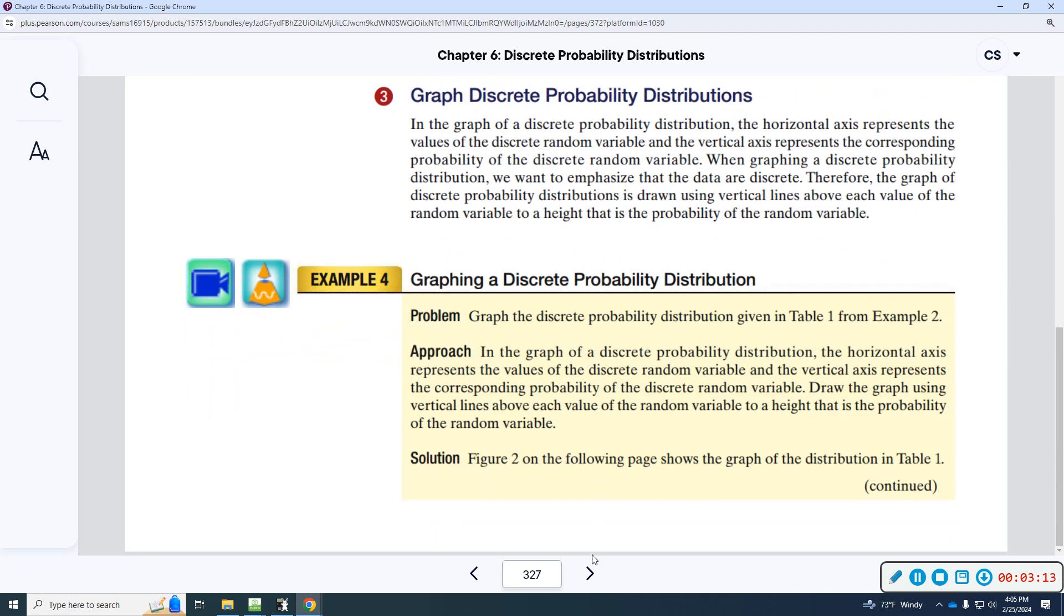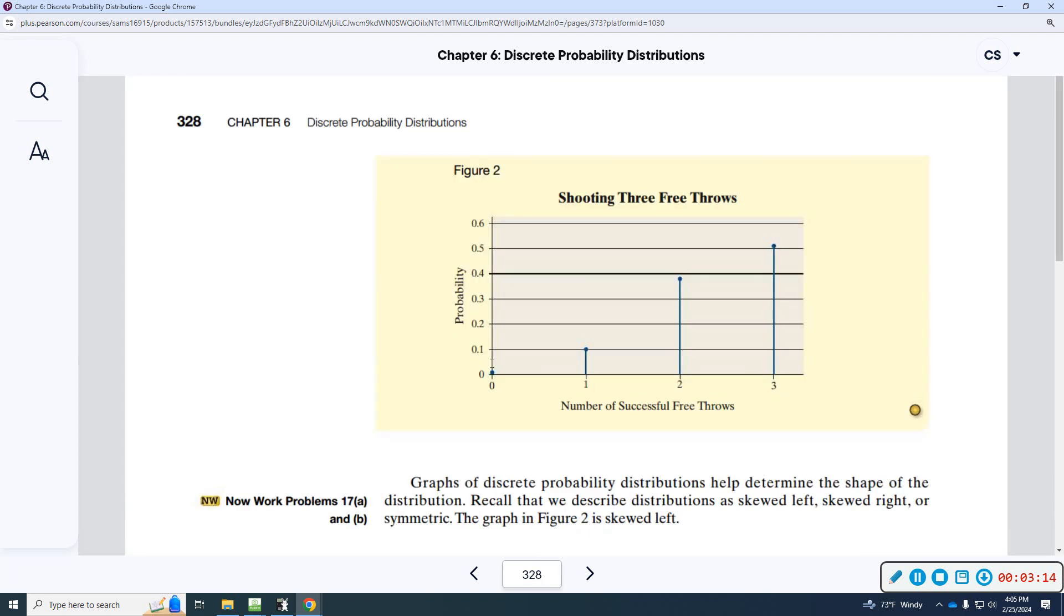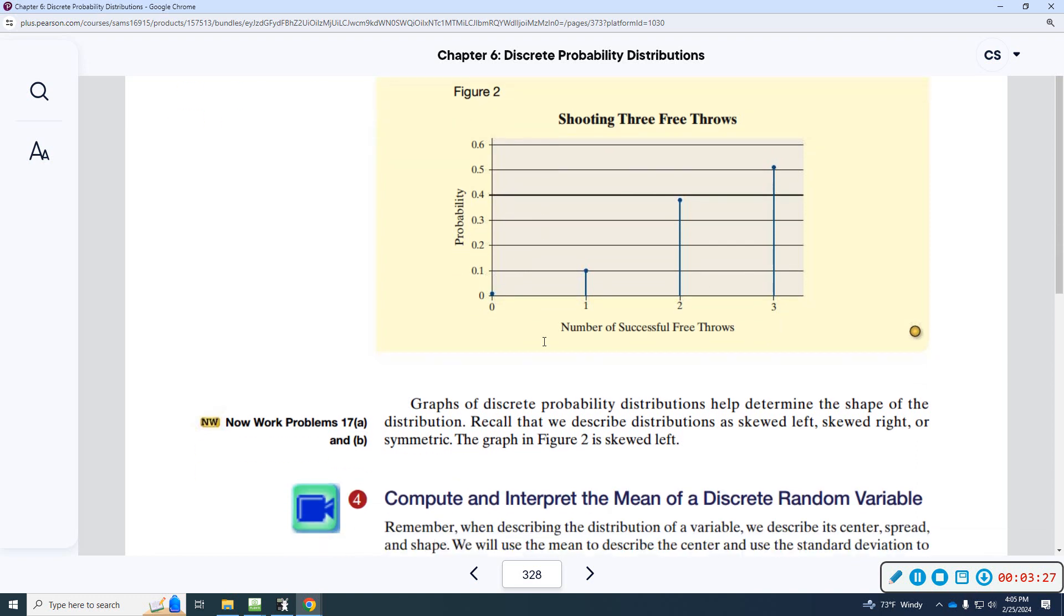Then, they talk about graphing them. Graph would have the probability on the left, and then number of success on the bottom or the count, and then that line would just go up to the height of that percentage or that probability.